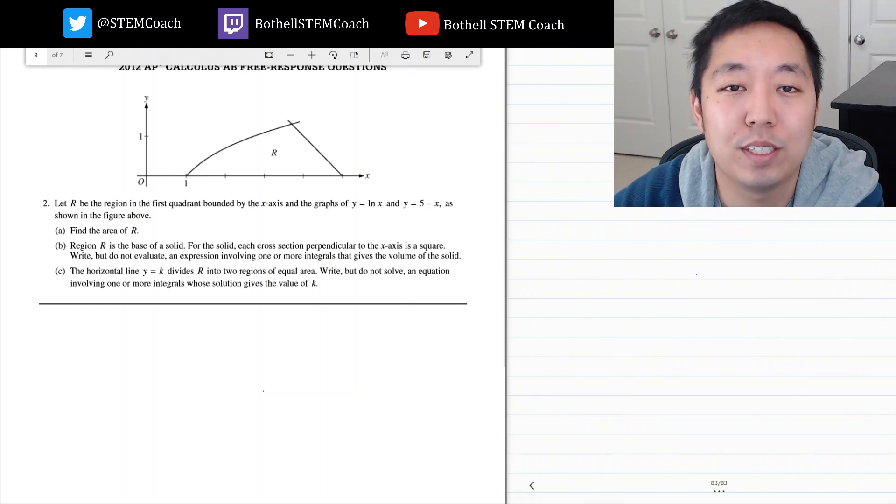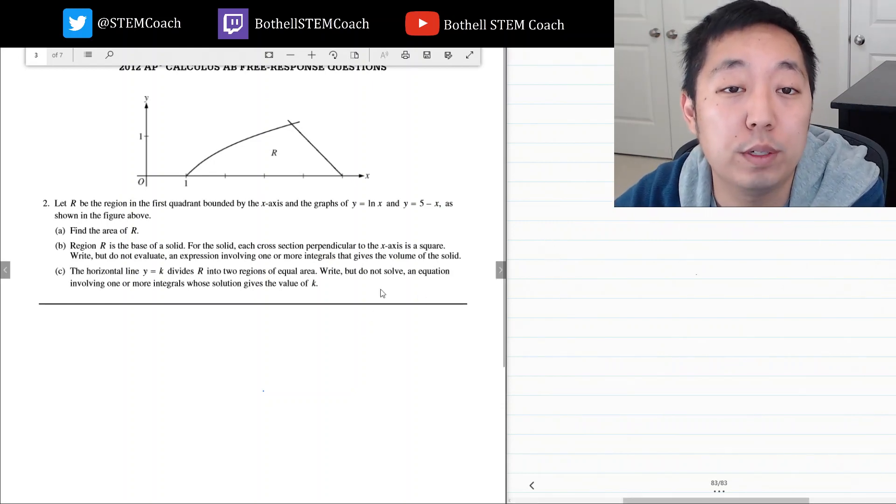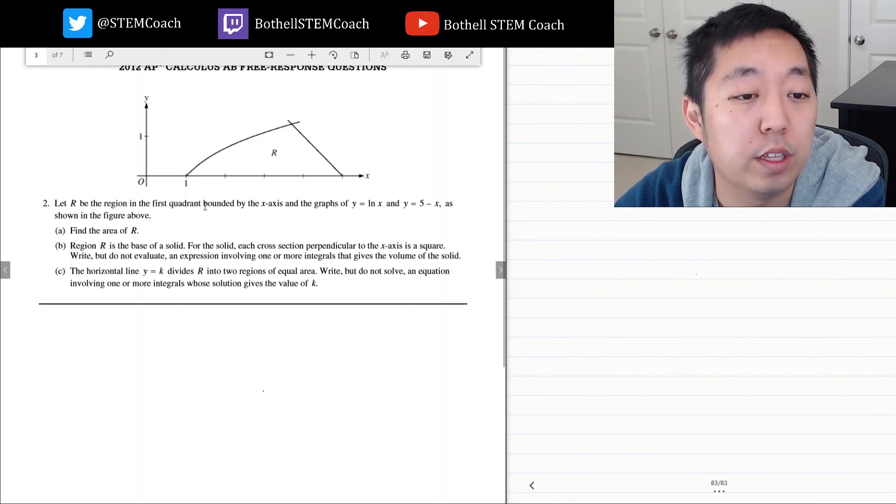Hey guys, this is Alan with Bothell STEM Coach and today we're continuing on with the AP Calculus 2012 free response questions. Here's number two. Let r be the region in the first quadrant bounded by the x-axis and the graphs y equals ln x and y equals 5 minus x.